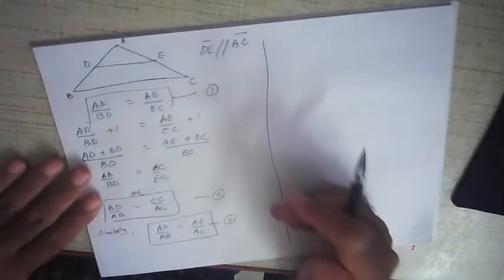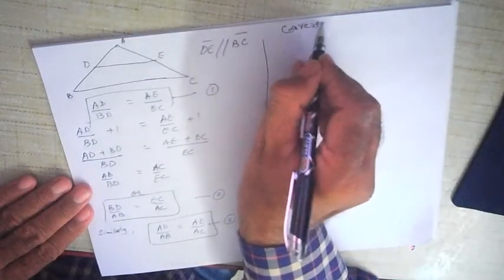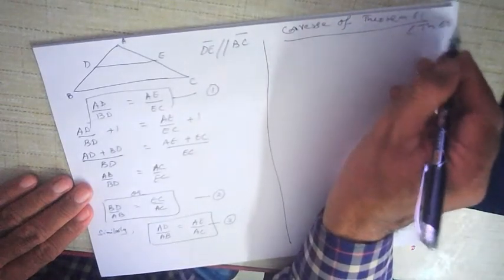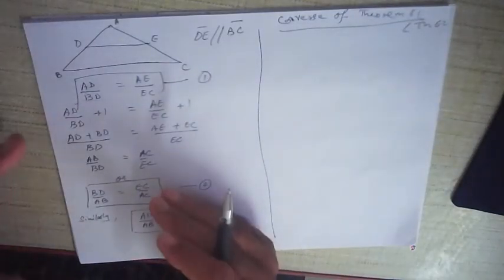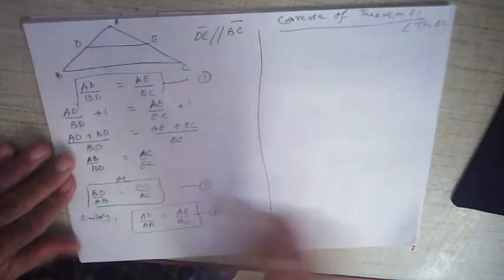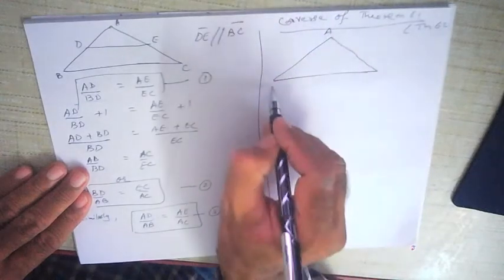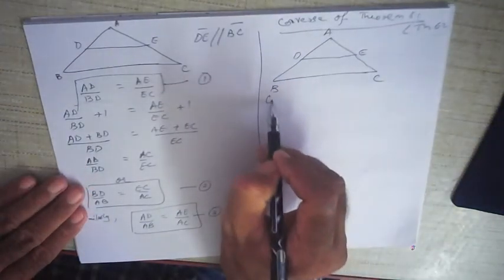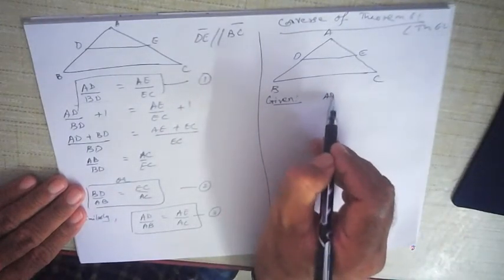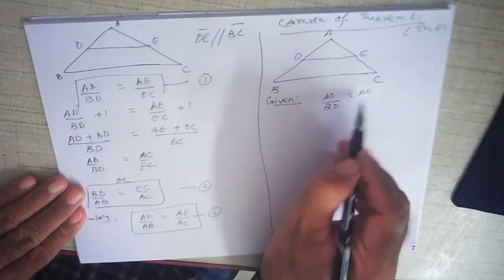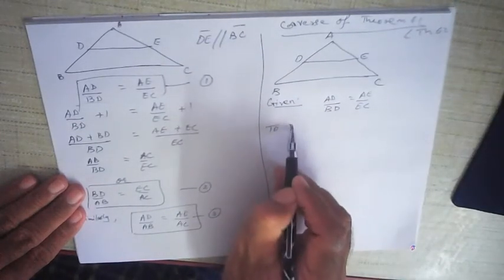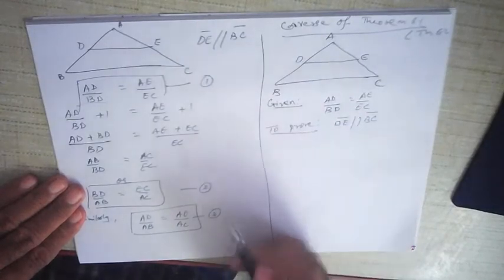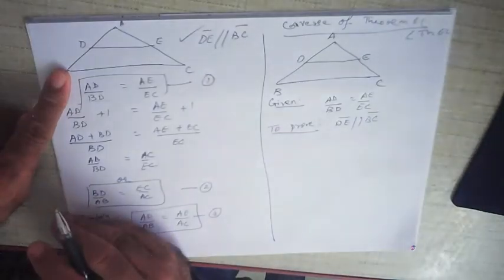Now the question arises: what is the converse of Theorem 6.1? That is Theorem 6.2. Theorem 6.2 states that if in a triangle a line is drawn such that AD/BD = AE/EC — this ratio is given to us — then we have to prove that DE is parallel to BC. In Theorem 6.1 it was given that DE is parallel to BC and we derived the ratio; here the ratio is given and we have to prove DE is parallel to BC.